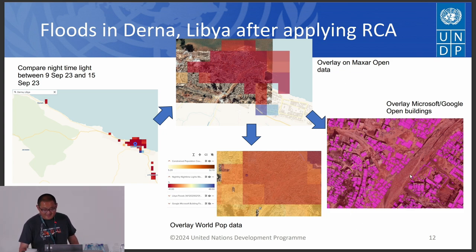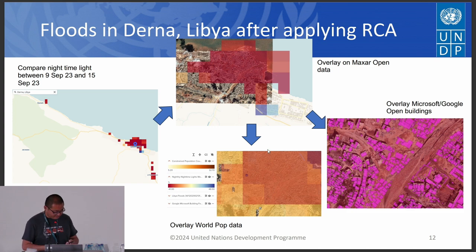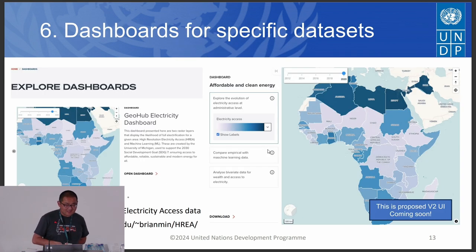Overlaying on Microsoft Google open buildings, you can see there were some buildings here that were completely removed in this area. Comparing with WorldPop data, this area had quite a large population, and the high population area was an affected area. This kind of rapid change assessment tool is available in Geohub for policy making.